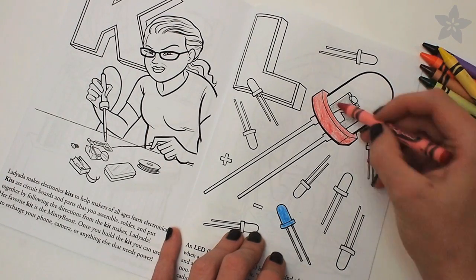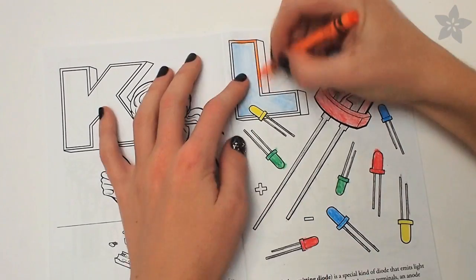L is for light-emitting diode and I had a great time bringing this drawing to life with lots of different colors.